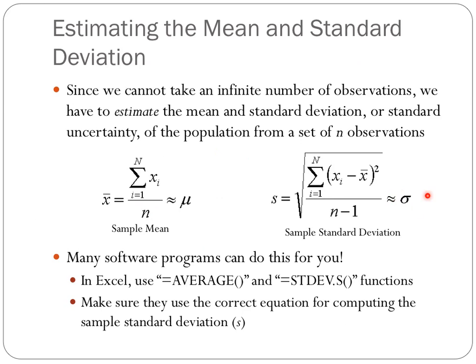The standard deviation of a probability density function can be estimated from a set of observations. This formula tells us that we first need to take the mean of all of the observations. Then for each individual observation, we're going to take the difference between that individual observation and the mean value, square it, and add all of those up. After we do that, we're going to divide by the number of observations minus one, and take the square root of it.